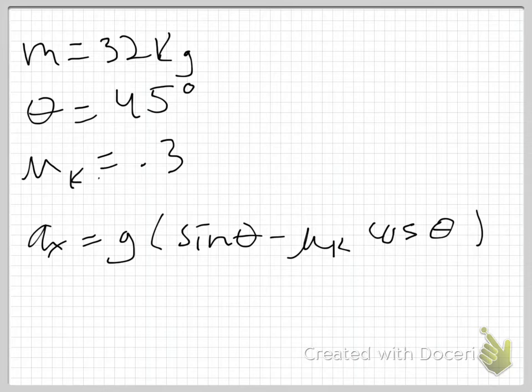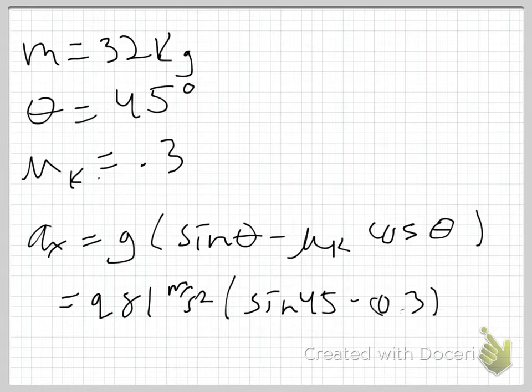So now this is going to be 9.81 meters per second squared times the sine of 45 minus 0.3 times the cosine of 45.